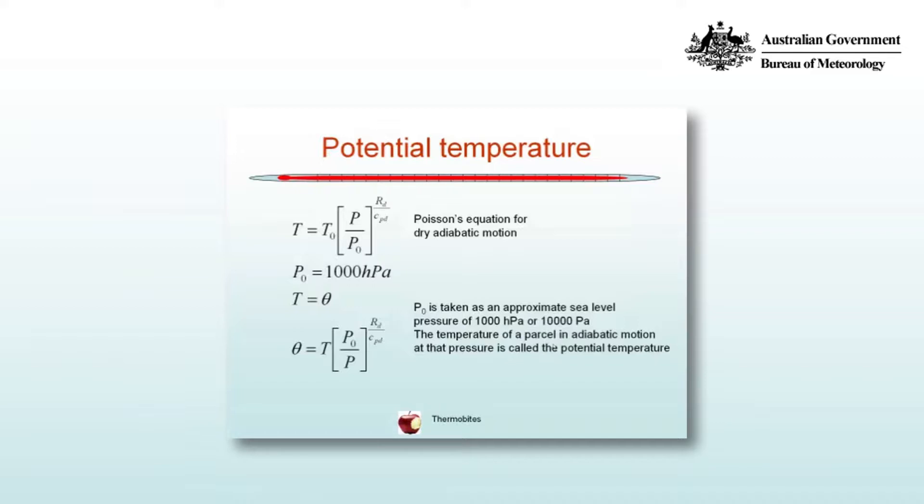P₀ of 1000 hectopascals is taken as an approximate mean sea level pressure. If a parcel undergoes dry adiabatic motion with no phase changes, then theta is a conserved parameter. It is the temperature that a parcel has the potential to reach if it moves up or down to 1000 hectopascals.